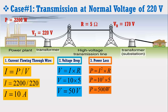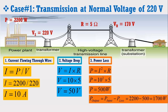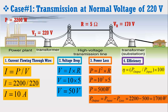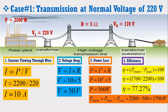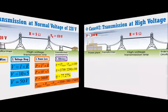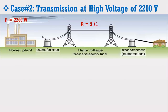It means that out of 2200 watt, only 1700 watt of power will be reached at the receiving station. Now we are going to calculate the efficiency of this transmission line. The formula for efficiency of the transmission line is given below. Putting the values of output power and input power in the above formula, it is found that efficiency of the transmission system at 220 volt is 77.27%. This efficiency is very low. These are all the results for the first case. Now we are going to consider Case 2, in which all the above calculations will be performed at high voltage.